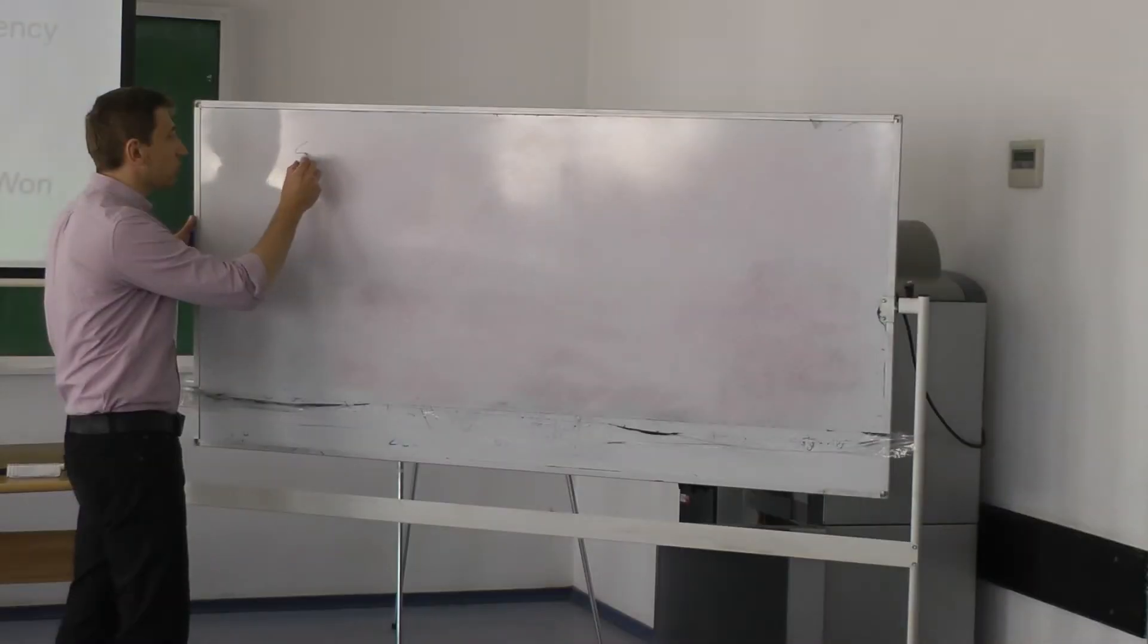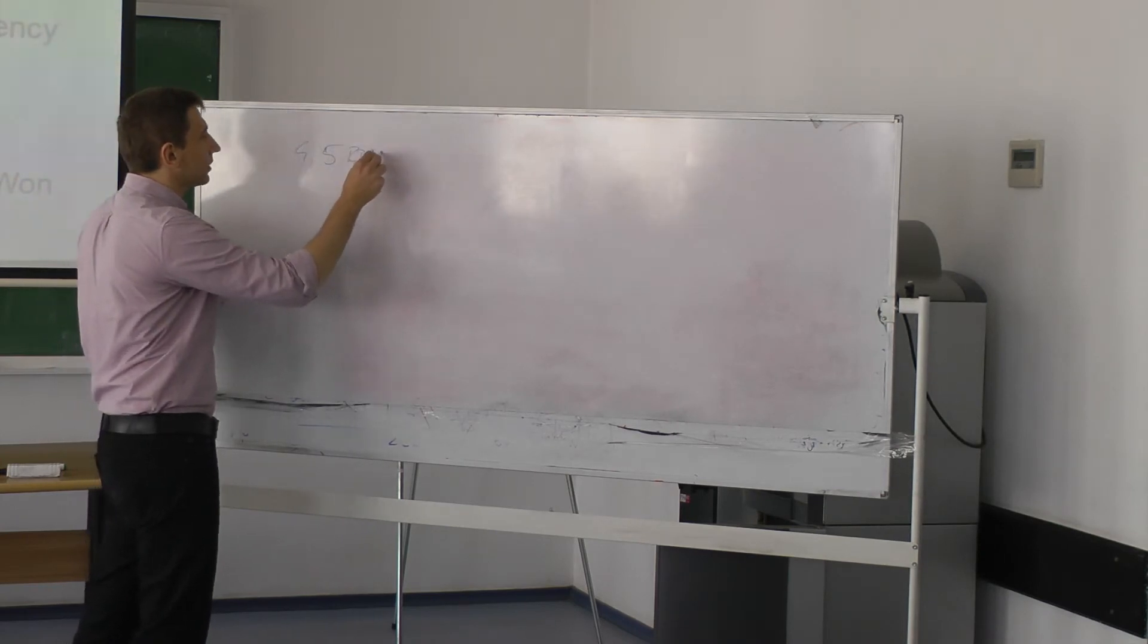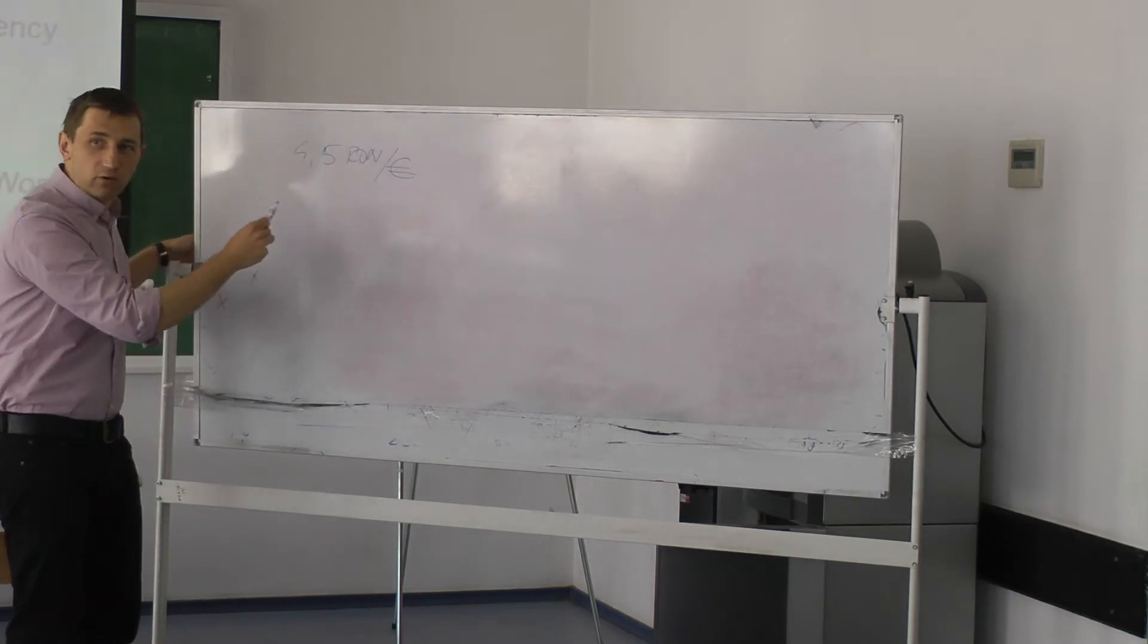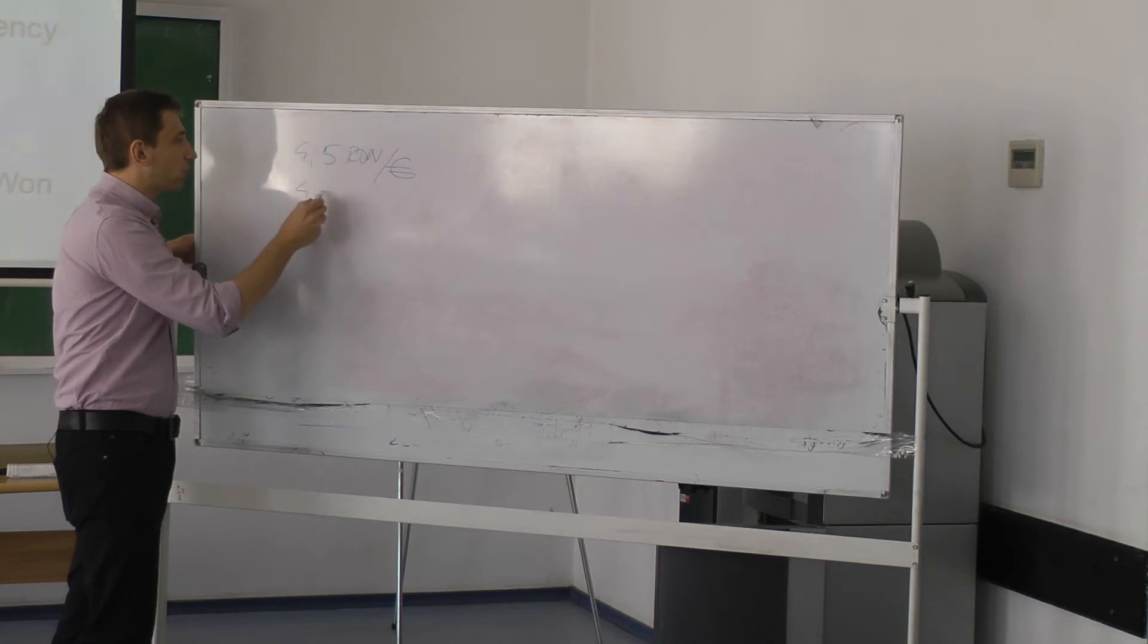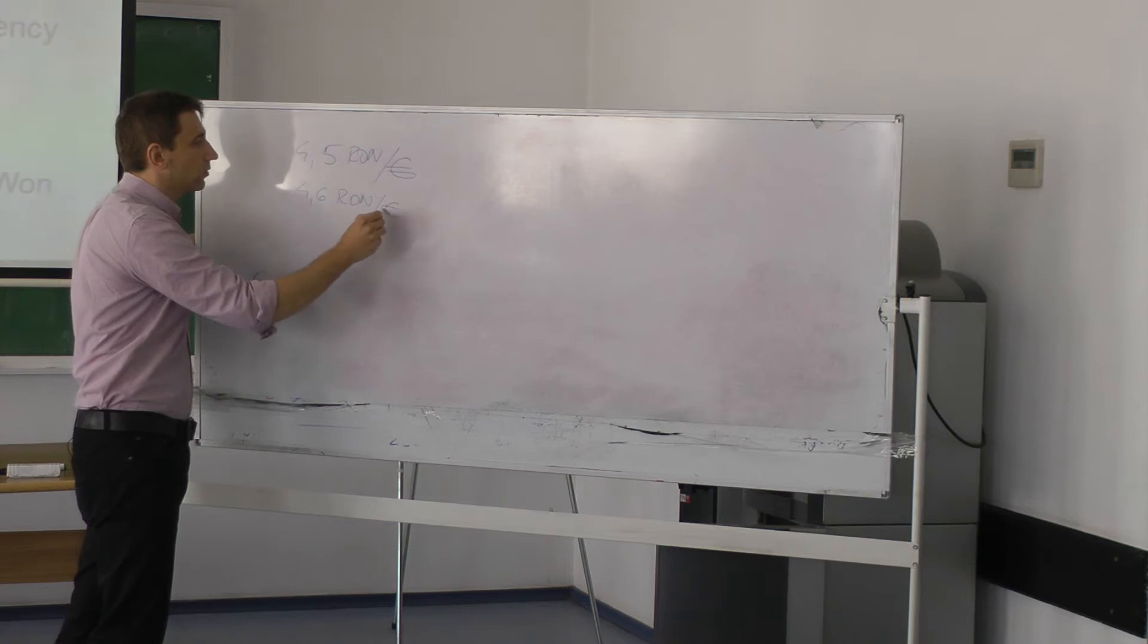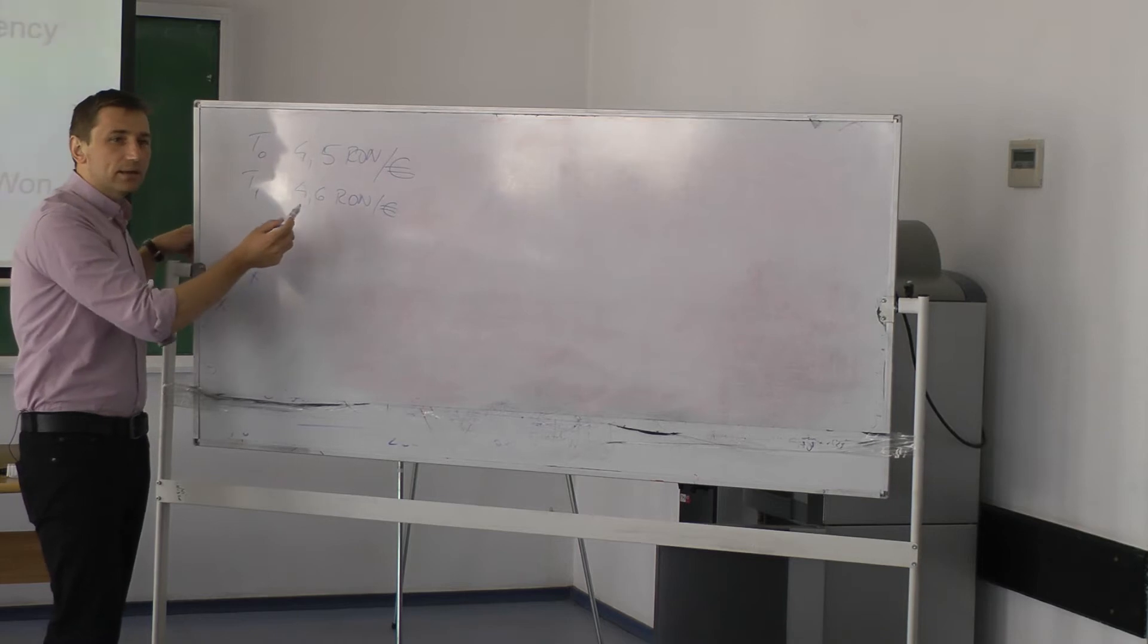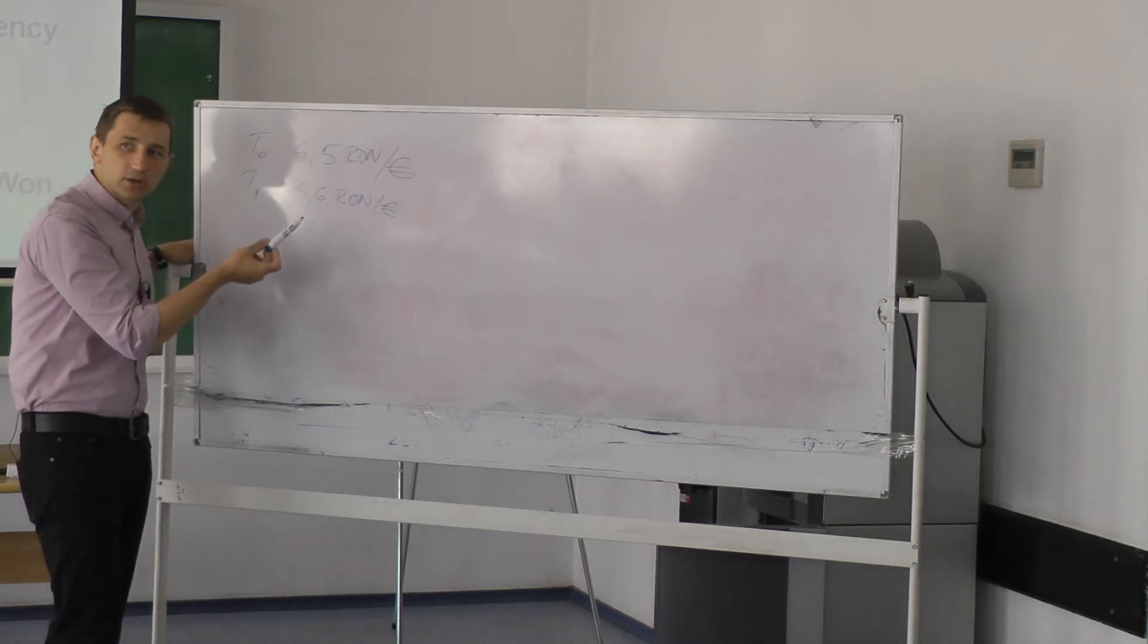I'm at an exchange: 4.5 lei for one euro. This is a direct quotation of our exchange rate, right? And now if I go to 4.6 ron for one euro, this is t0, this is t1. What happened here with our currency? Was it appreciation or depreciation?